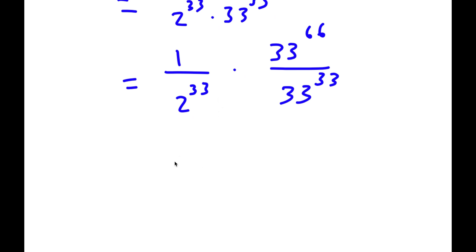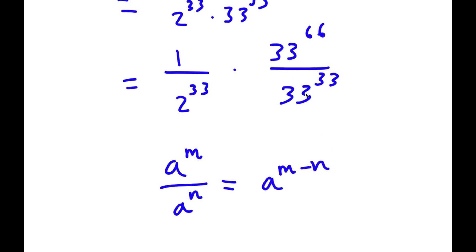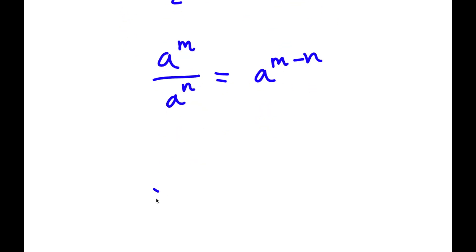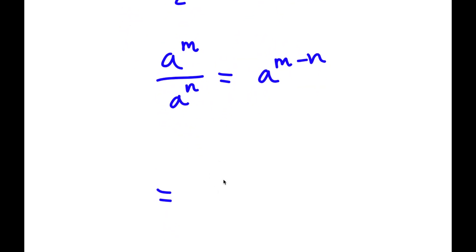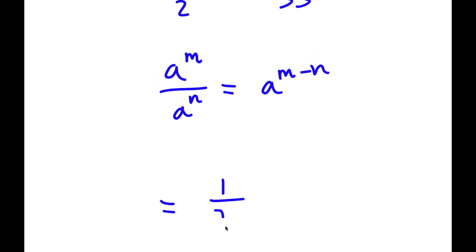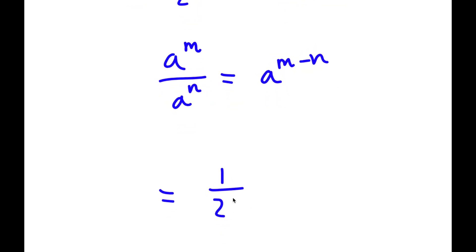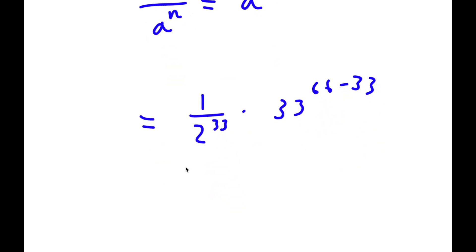If I have something in the form a to the power of m over a to the power of n, this is equal to a to the power of m minus n. So 33 to the power of 66 over 33 to the power of 33 equals 33 to the power of 66 minus 33, and 66 minus 33 is simply 33. So now I have 1 over 2 to the power of 33 times 33 to the power of 33.